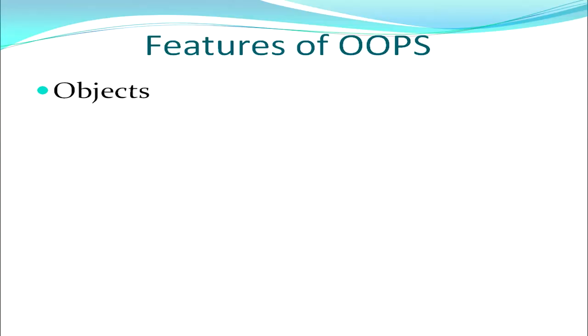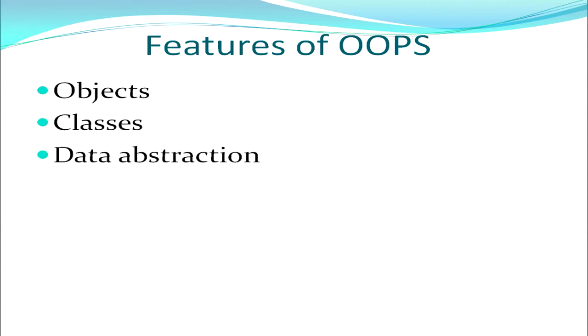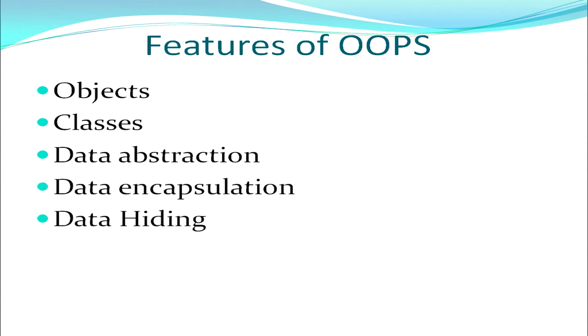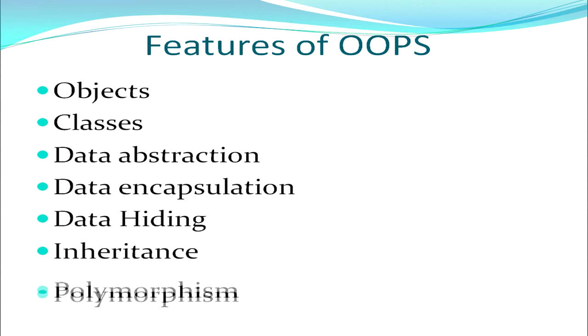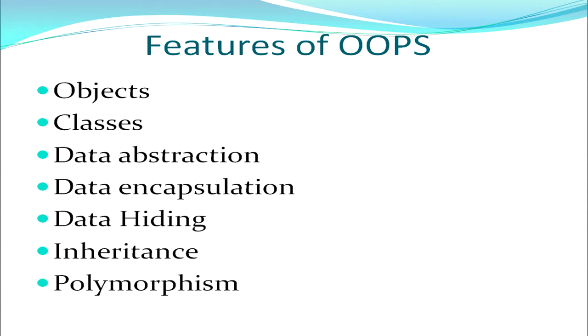There are various features associated with object oriented programming. Each OOP system has objects, classes, data abstraction, data encapsulation, data hiding, inheritance, and finally polymorphism. All these constitute the basic features of OOP, and we will be covering all these features one by one.